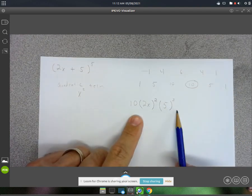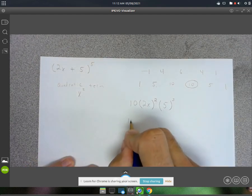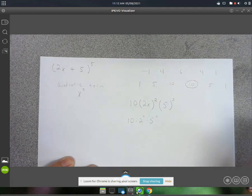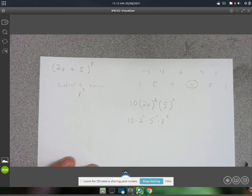So whatever this multiplies out to be, this is going to tell me my quadratic term, so it's going to be 10 times 2 to the 2nd, and then times 5 to the 3rd, times x squared. Whatever this comes out to be, that'll be it.